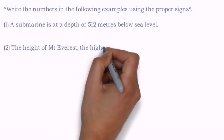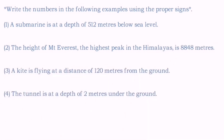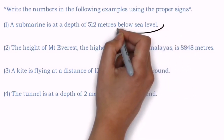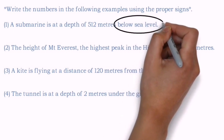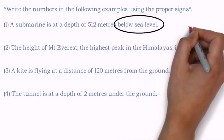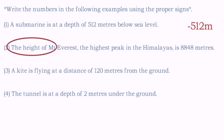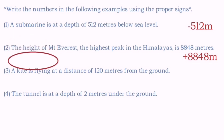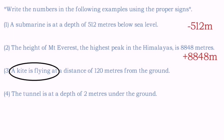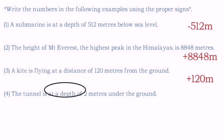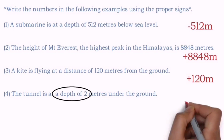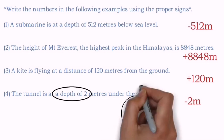Now we have to write the proper sign for the following statements. The submarine is at a depth of 512 meters — depth means it is below sea level, so we write minus 512 meters. The height of Mount Everest — height means it is above sea level, so it is written with a positive sign. A kite is flying — the kite always flies above the ground, so we write a positive sign. The last one is again a depth — under the ground means a negative sign. I hope you have enjoyed it. Don't forget to copy this all in your notebook.